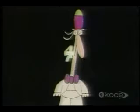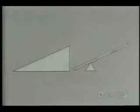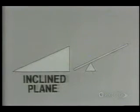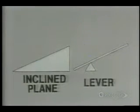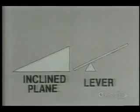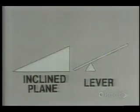How many different types of simple machine do you think there are? Two. There are only two basic machines: the inclined plane and the lever. These are the mother and father of every machine in the world. All the others are merely variations on the same theme.